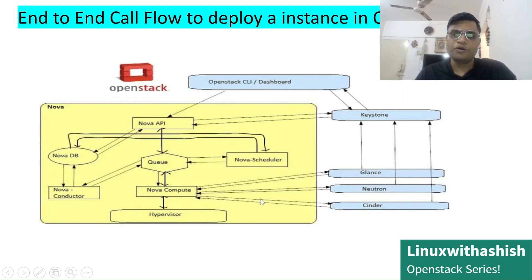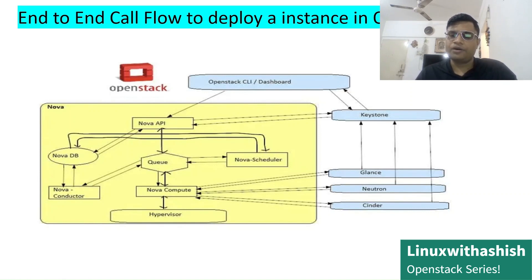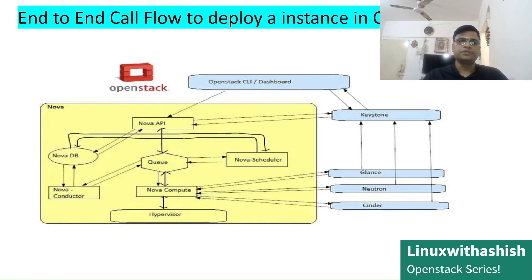Nova then goes to Cinder and asks for block storage for the virtual machine. Cinder confirms back to Keystone whether the auth token is legitimate and the user is valid. Keystone sends back a confirmation to Cinder via a REST API call. Cinder then sends the block storage metadata to Nova Compute via REST API. The metadata for the image, IP address, and storage are all kept in Nova Compute.